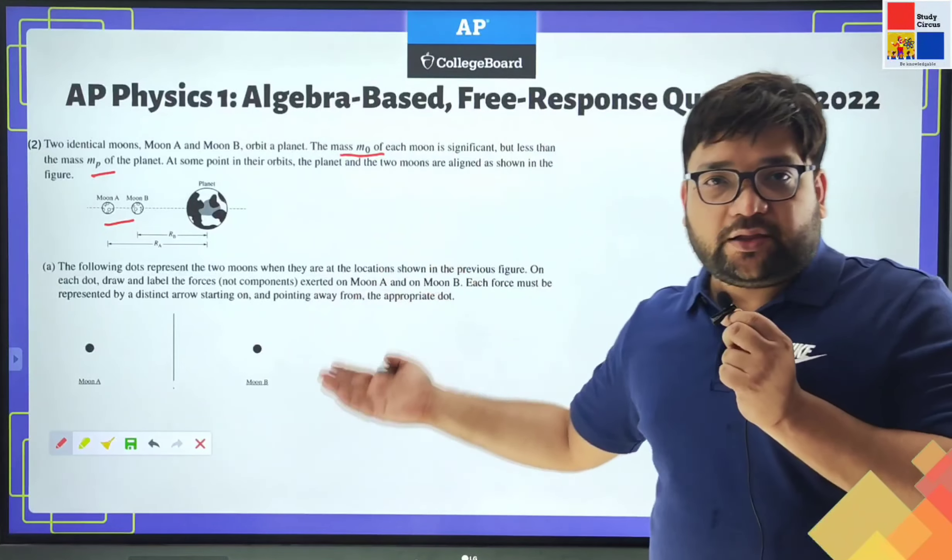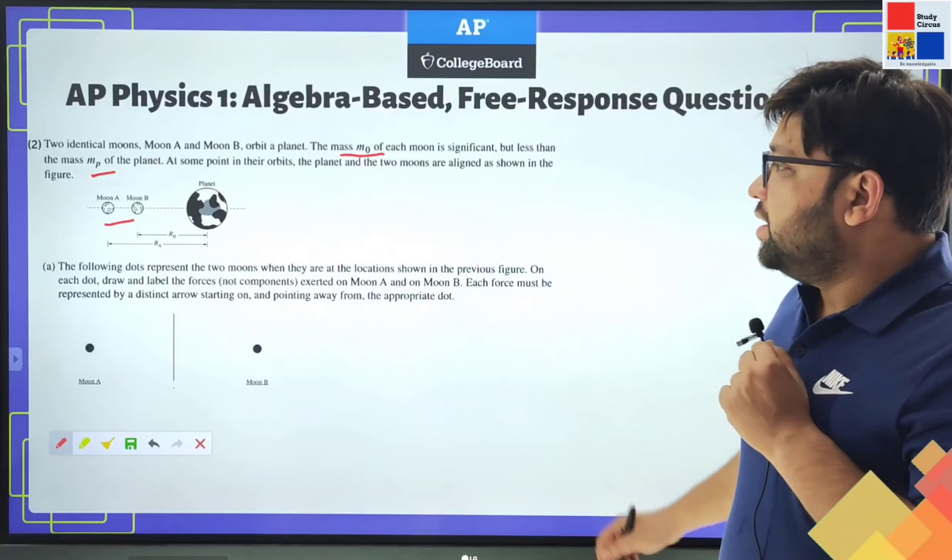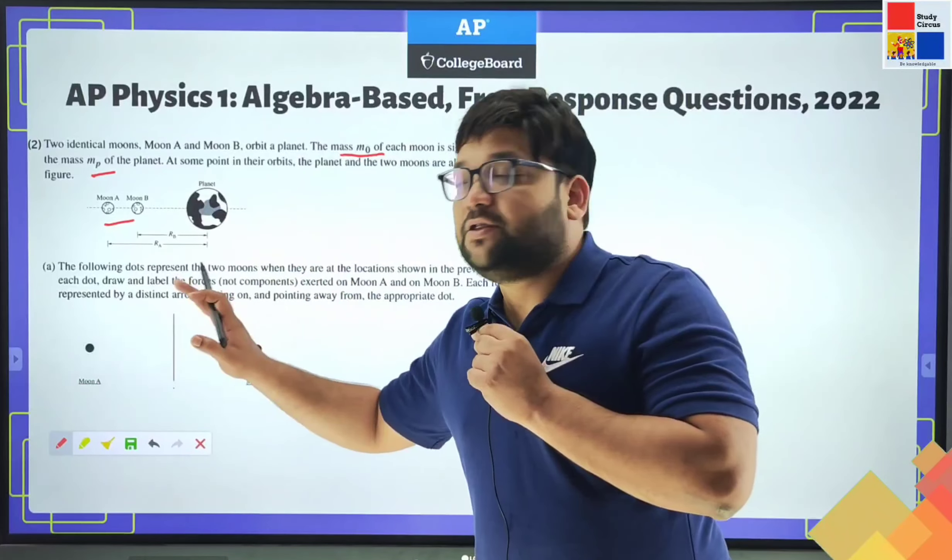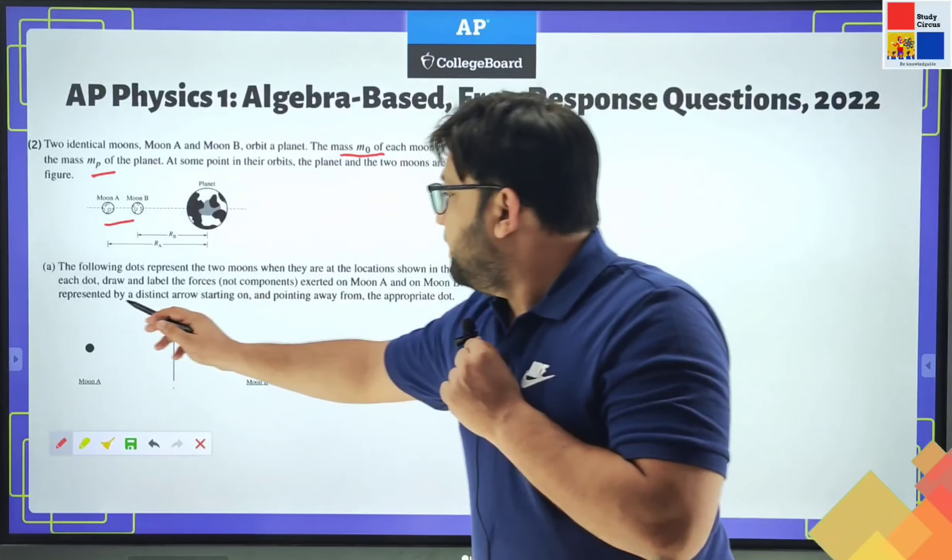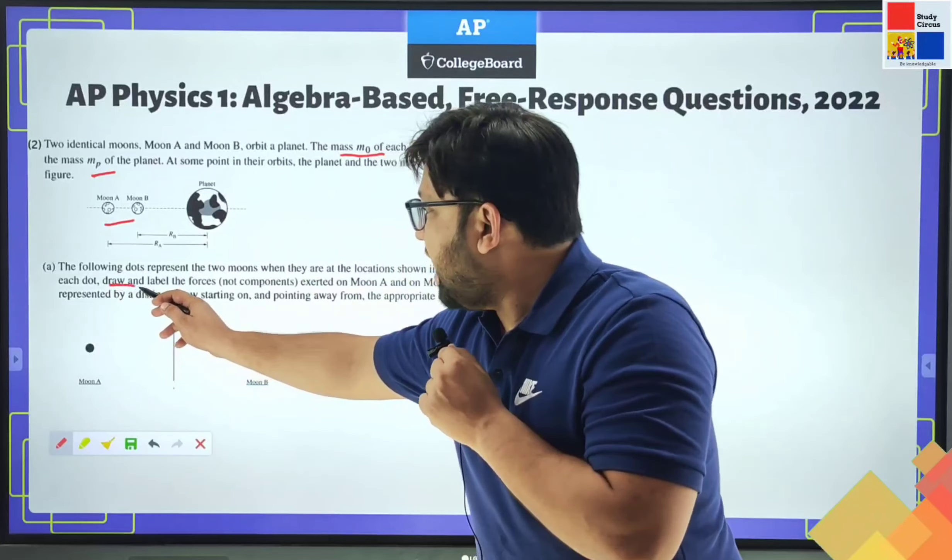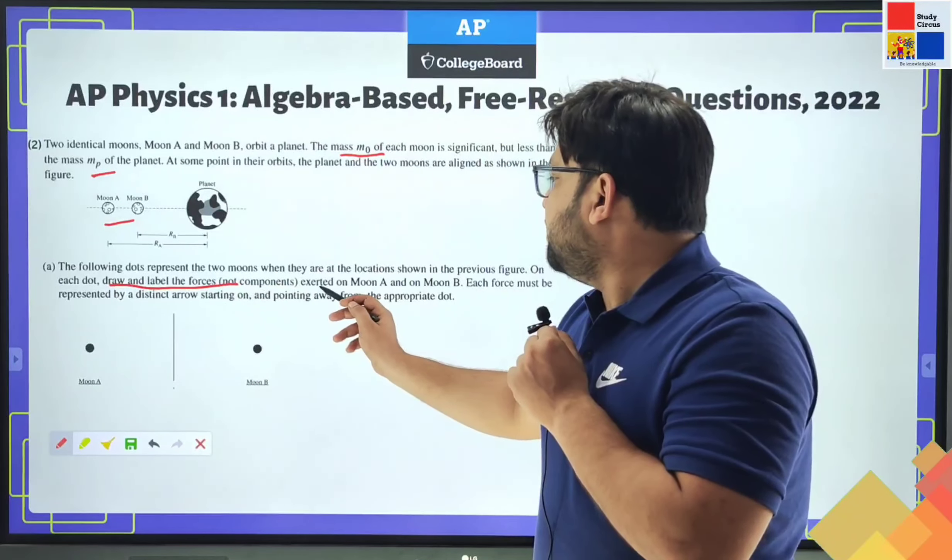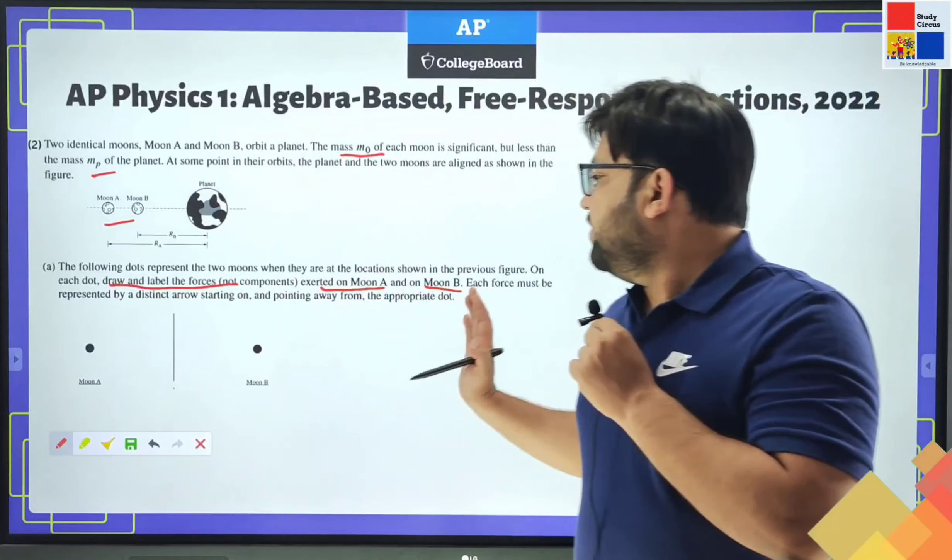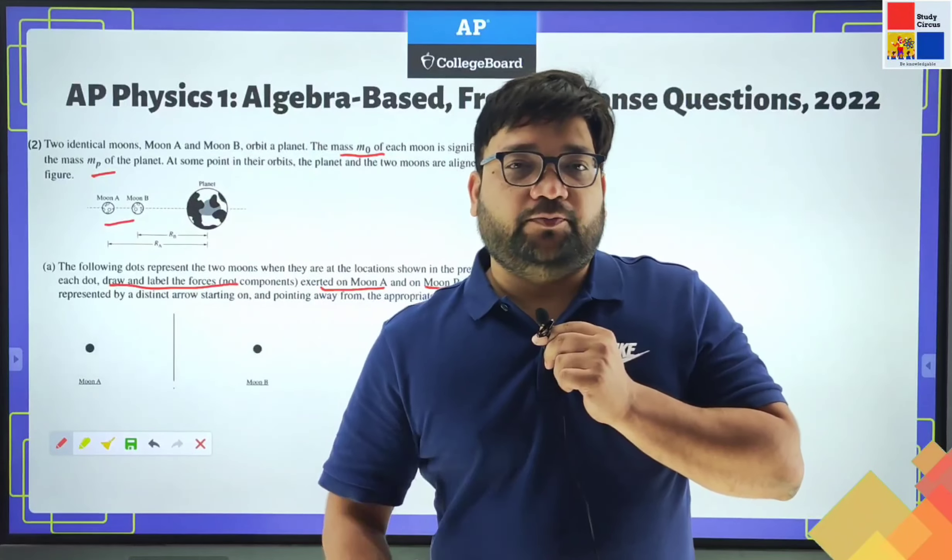So we have to answer the following question. The first question is that these two dots, if we consider them to be the planet, we have to draw and label the forces exerted on moon A and moon B, and represent that using an arrow.